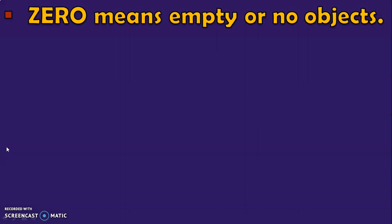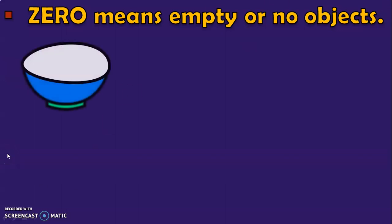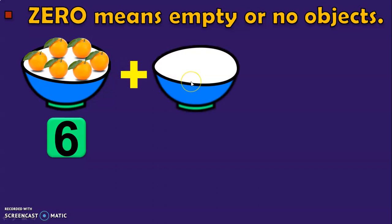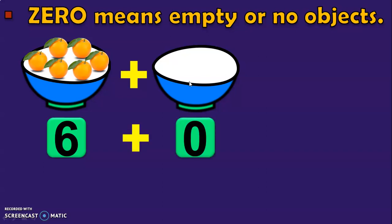Let us move on to understand the next property now. Zero means empty or no objects. We have dealt with zero in a separate video. Let us understand zero with the help of an example. You have a bowl in which some fruits are kept. How many oranges are there? Let us count: 1, 2, 3, 4, 5, and 6. There are 6 oranges in one bowl. There is another bowl which is empty — there are 0 oranges in it.